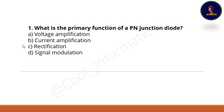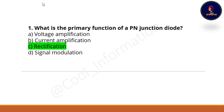First question: What is the primary function of a PN junction diode? Option A: voltage amplification. Option B: current amplification. Option C: rectification. Option D: signal modulation. The correct option is rectification.